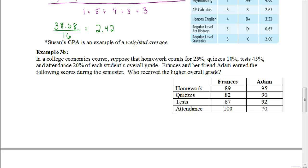Frances and her friend Adam earned the following scores during the semester. We want to figure out who received the higher overall grade. So let's look at their grades here for a minute so we can see that Frances did a really good job. He went to class every single day, had one hundred percent attendance. Got about a B average for his tests and quizzes and about an A minus B plus for homework.